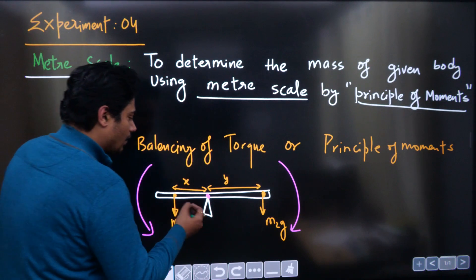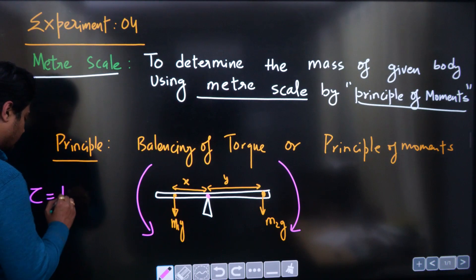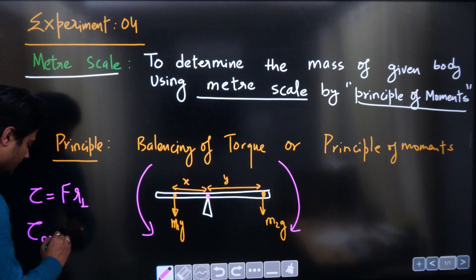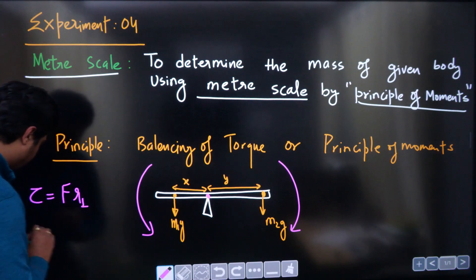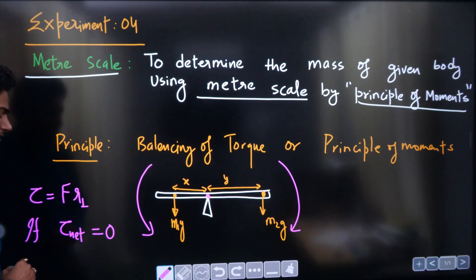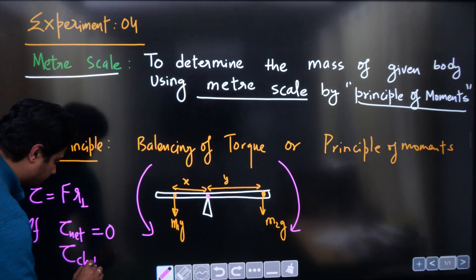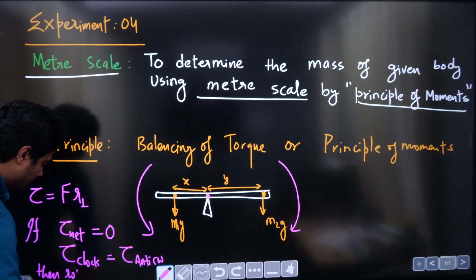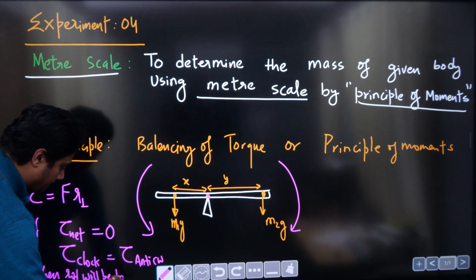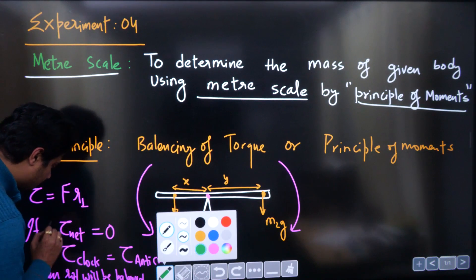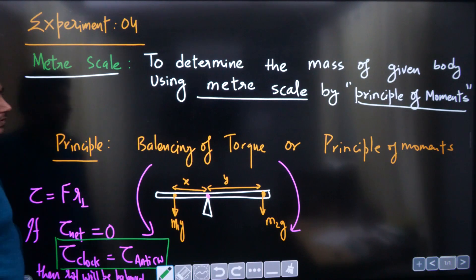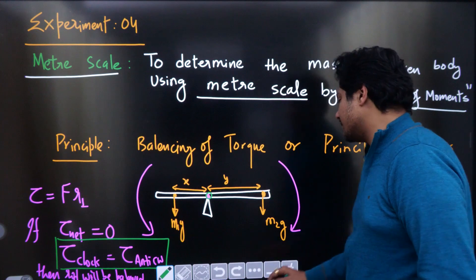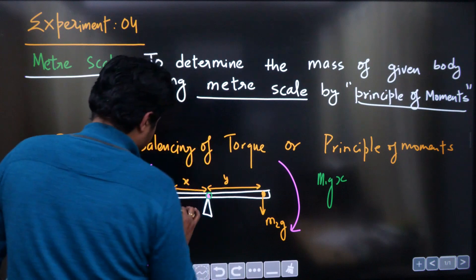So if the scale is balanced, the net torque about the hinge should be zero. We calculate torque as force into perpendicular distance. The net clockwise torque should be equal to the net anti-clockwise torque, then the rod will be balanced. So the torque due to M1G acting at distance X is M1G into X.